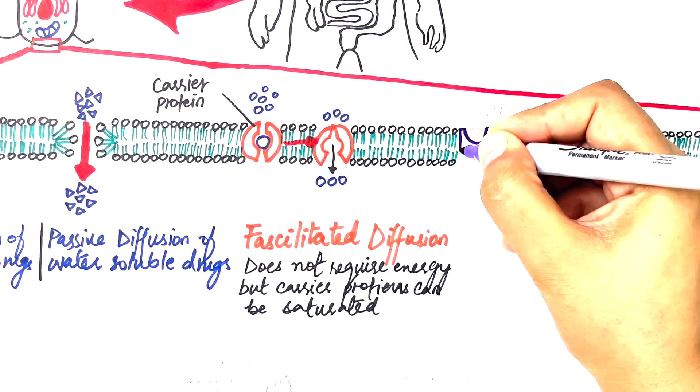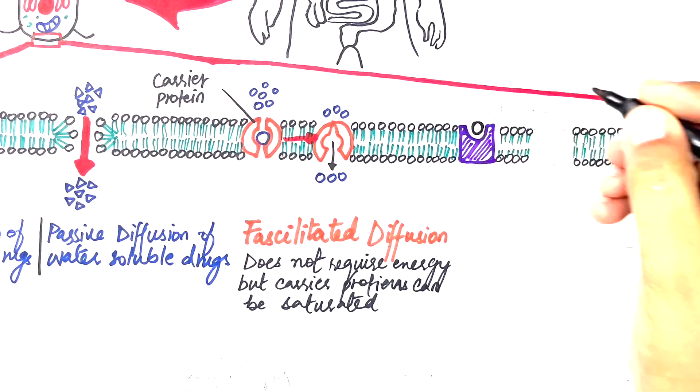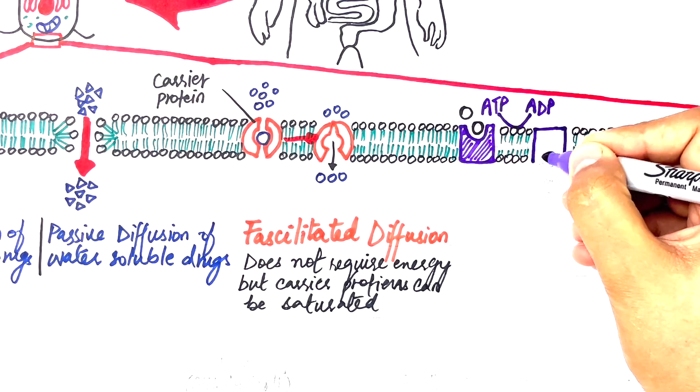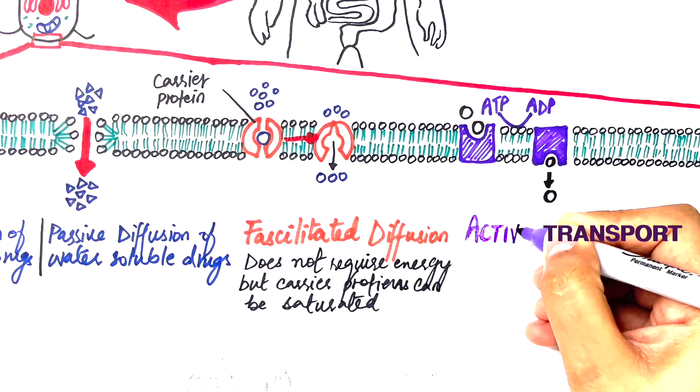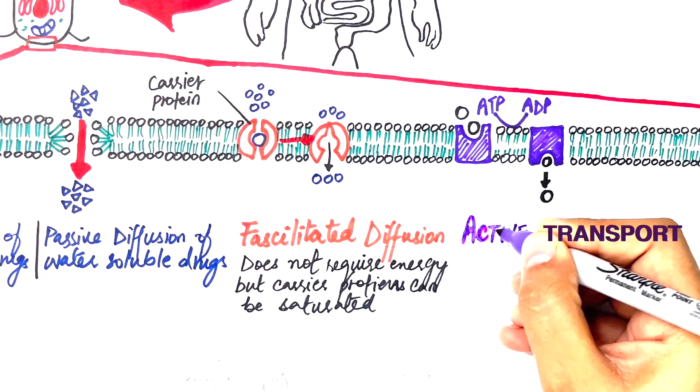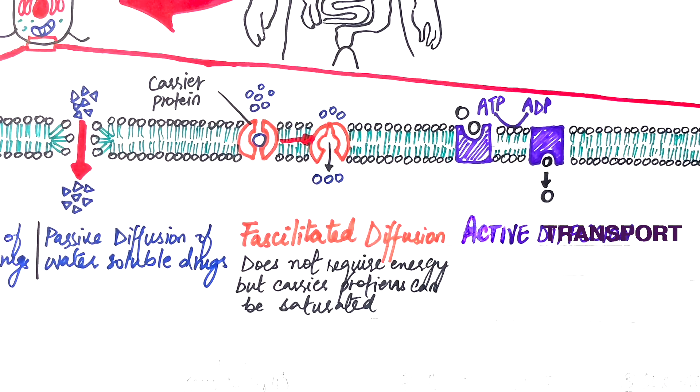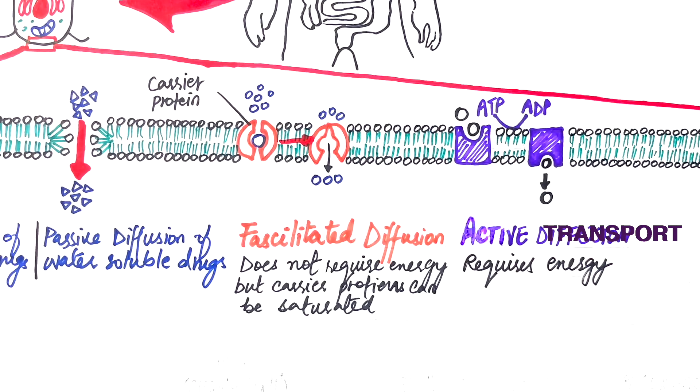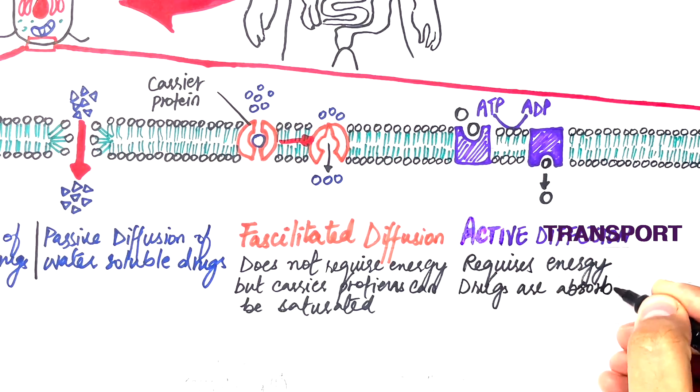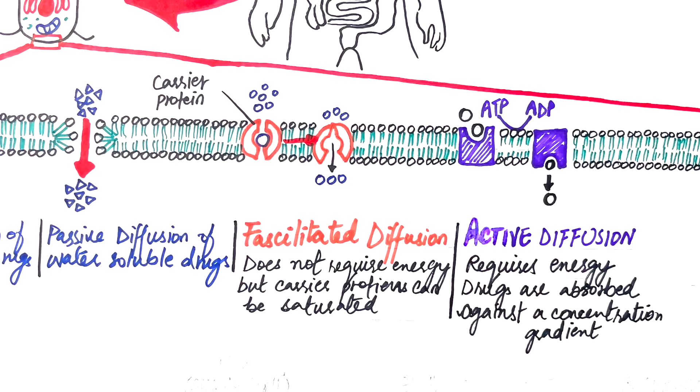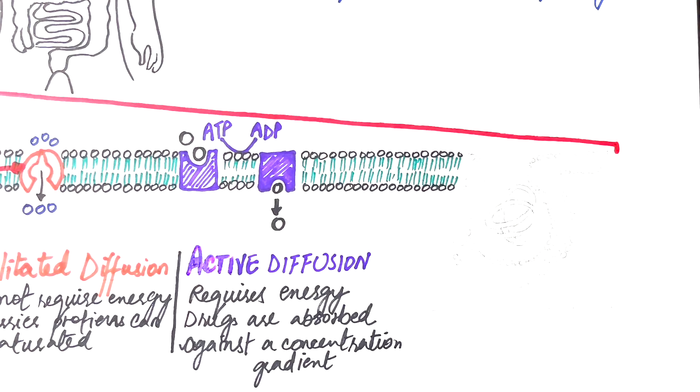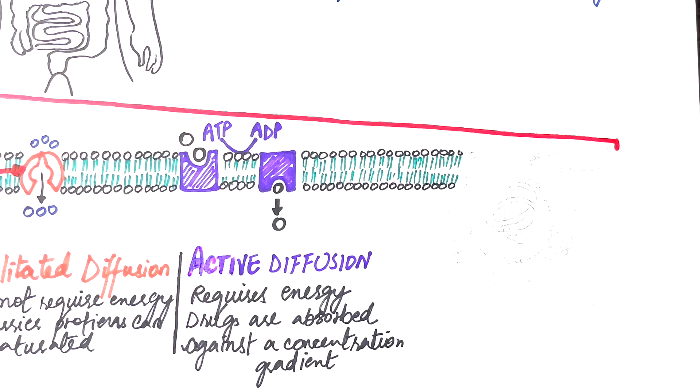Unlike passive diffusion, active diffusion always needs an energy expenditure by the ATP or adenosine triphosphate. In active transport, drugs are moved against a concentration gradient from a region of low drug concentration to a region of high drug concentration such as bloodstream. Active transport is considered to be limited to drugs structurally similar to endogenous substances such as ions, vitamins, sugars, or amino acids. These drugs are usually absorbed from specific sites in the small intestine against a concentration gradient.